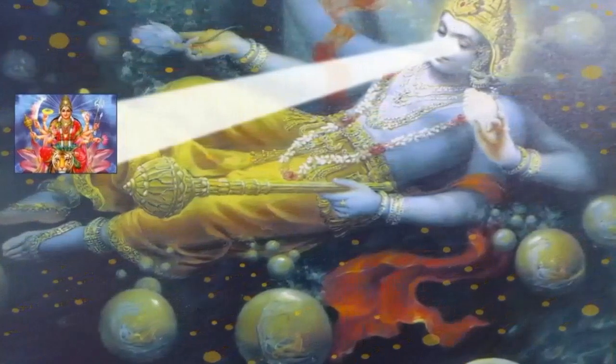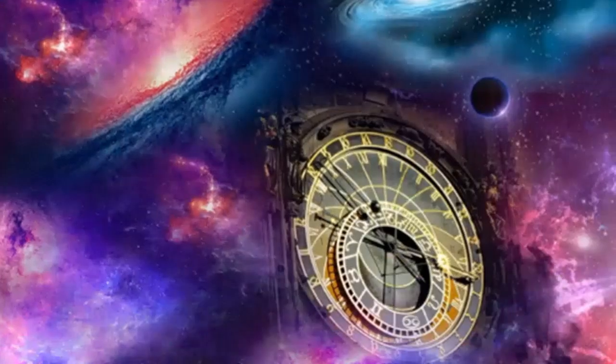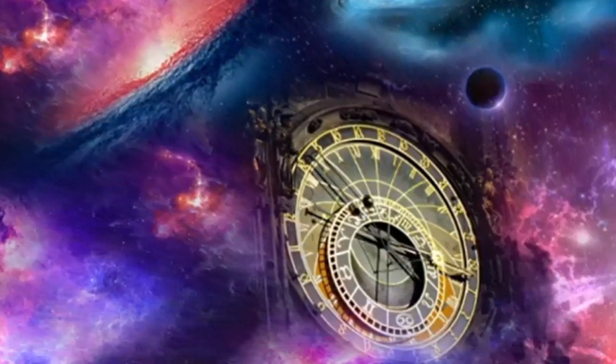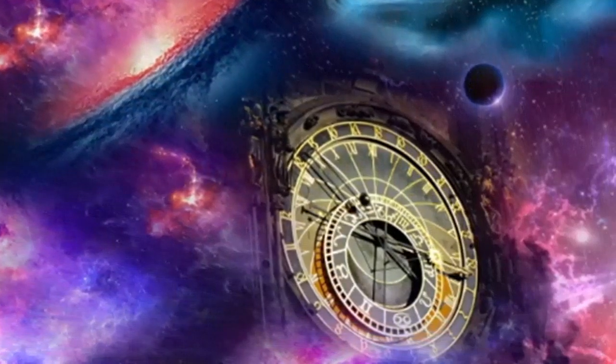With Karanodakashayi Vishnu's breathing in and out, the universes are created and annihilated. This is the basis of Kala, the time representative of Krishna that controls all aspects of the material manifestation.